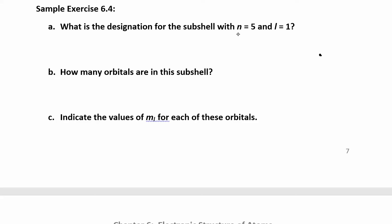So if n equals 5, that's the energy level, energy level 5, and l is 1. So if l is 0, it's an s orbital. If l is 1, it's a p orbital. So I can say this designation is just 5p.